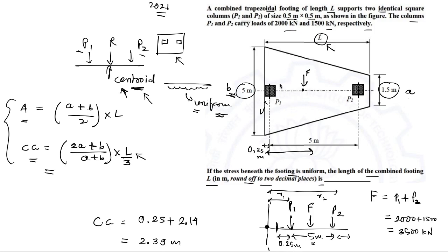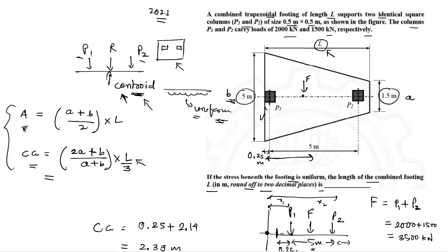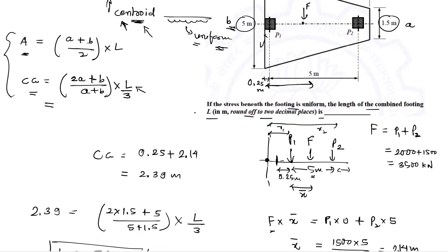This question can also be modified: instead of area, the soil's bearing capacity can be given. Using the total applied load and bearing capacity, we first find the required area, and then using the trapezoid equations we can solve for the dimensions A and B of the footing.